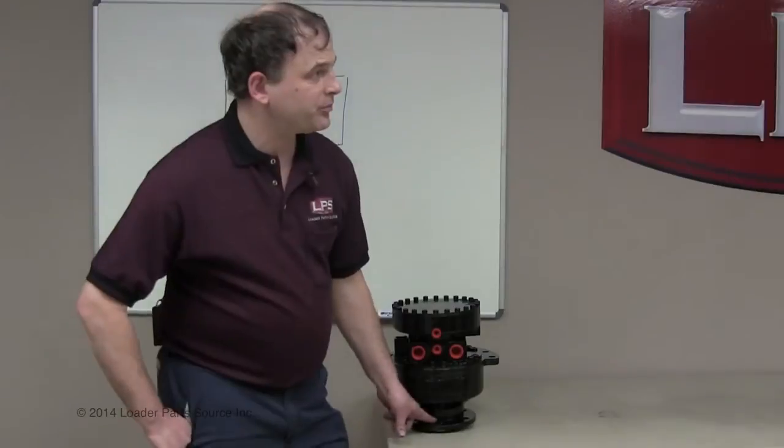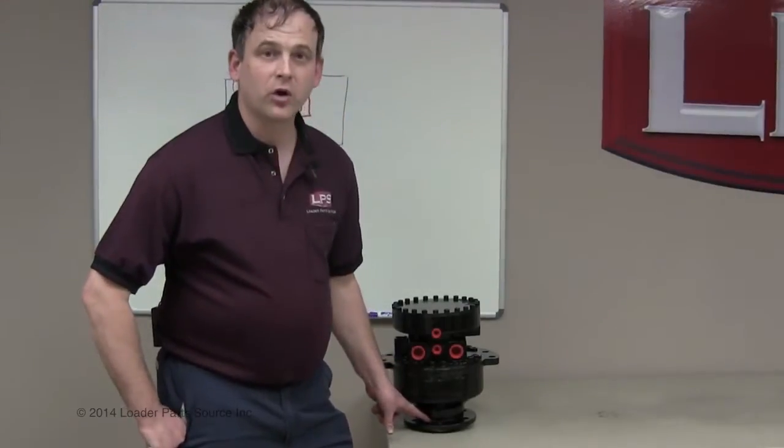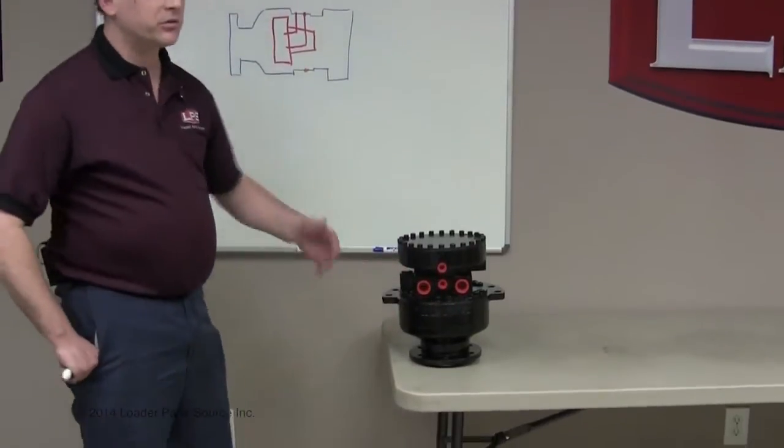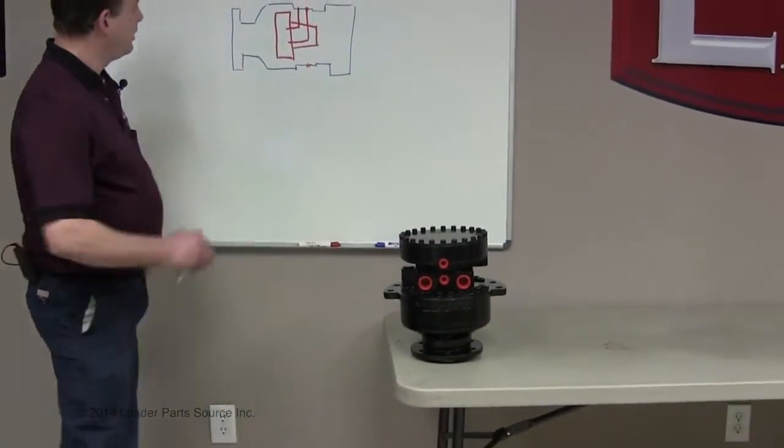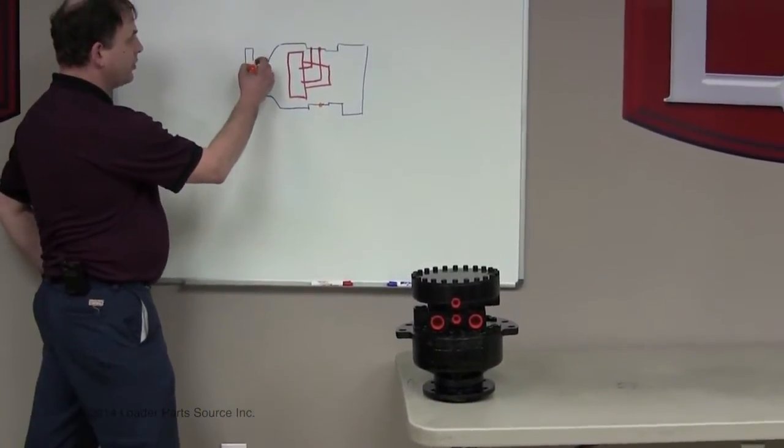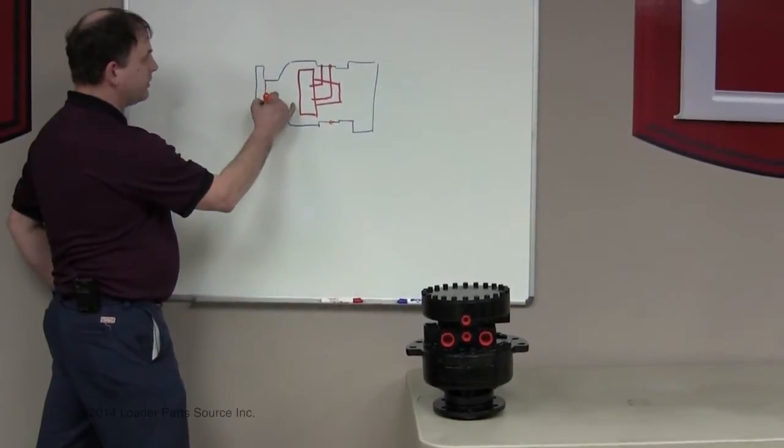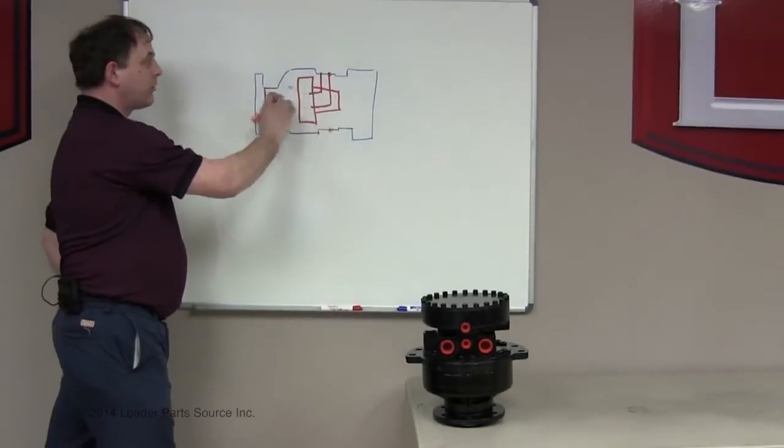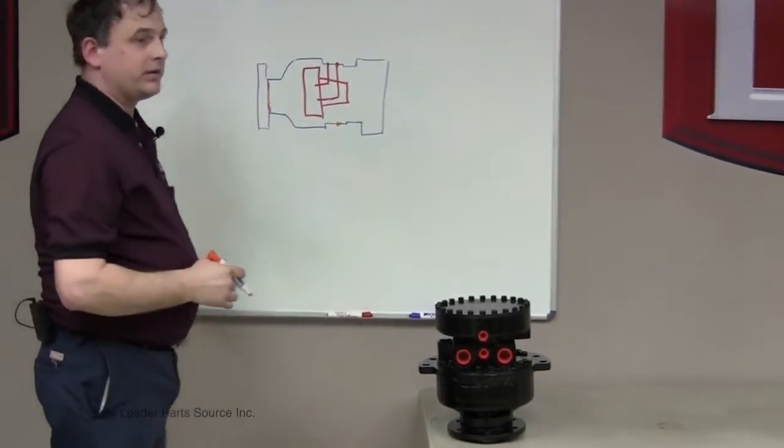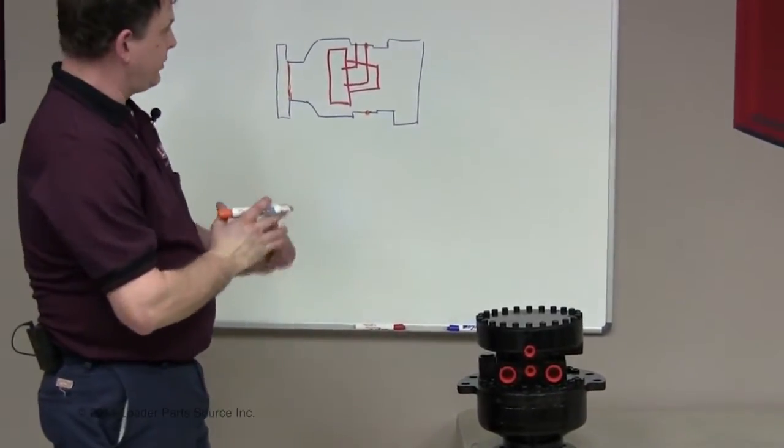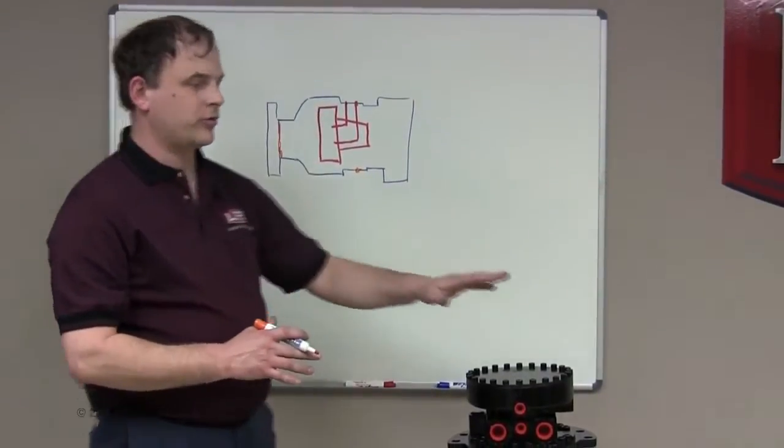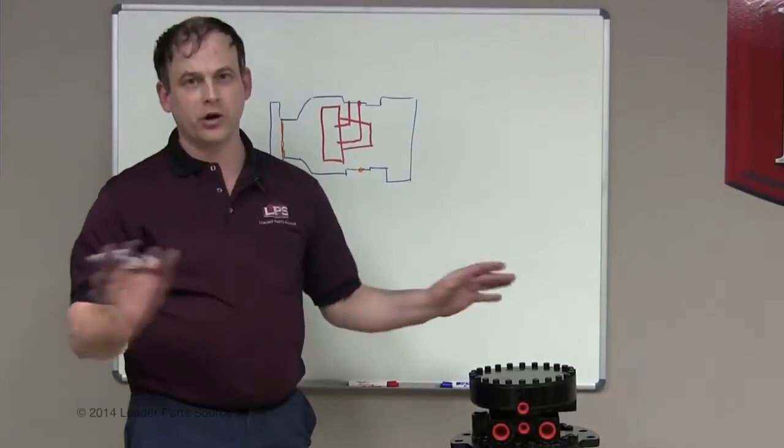They're talking about this area right here. If oil is leaking out of here, we can't see the inside of the motor, so we're going to use the whiteboard. There's oil seals right here that seal the motor oil from the outside, and that's the most common failure point for track drive motors on any brand of machine.